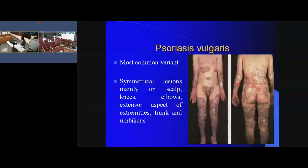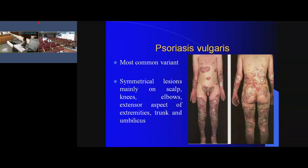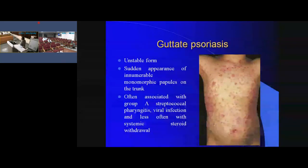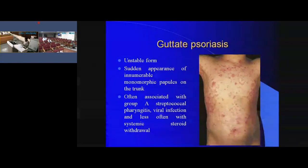Psoriasis vulgaris, or chronic plaque psoriasis, presents with papules and plaques on the extensor aspect of the extremities, scalp, and other common sites. The lesions are usually symmetrical. Guttate psoriasis is an unstable form where the patient presents with sudden appearance of small-sized, usually papular lesions with fine scales, appearing monomorphically on the trunk.